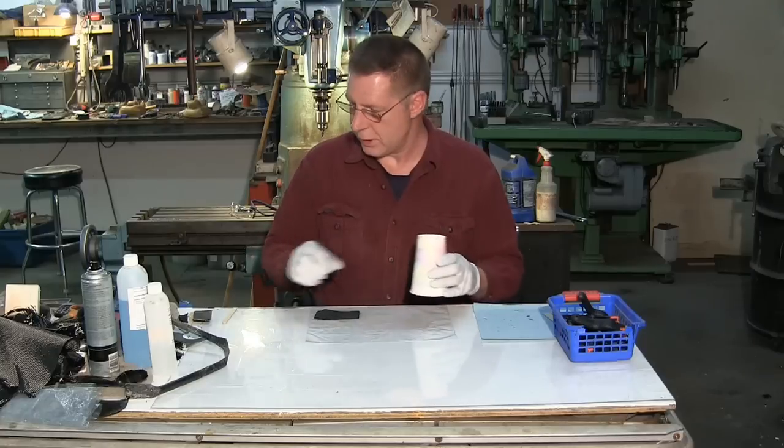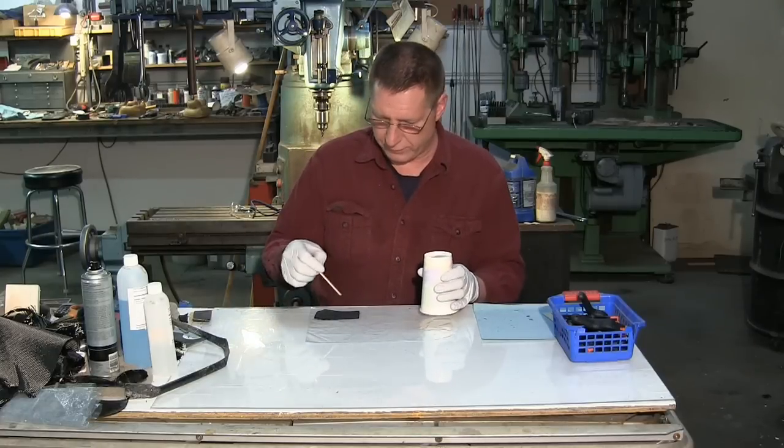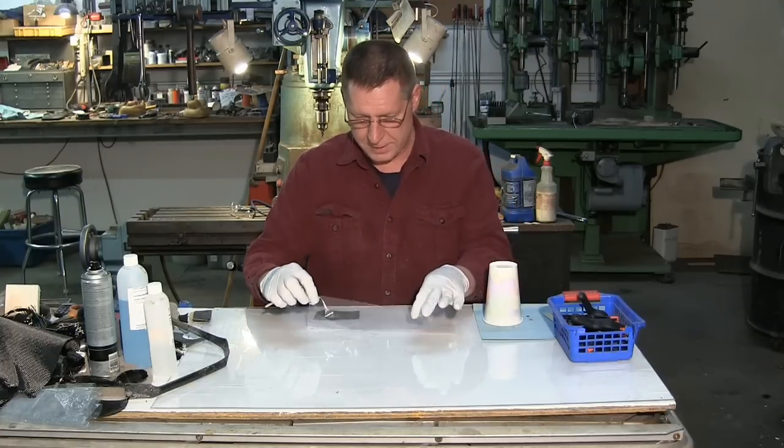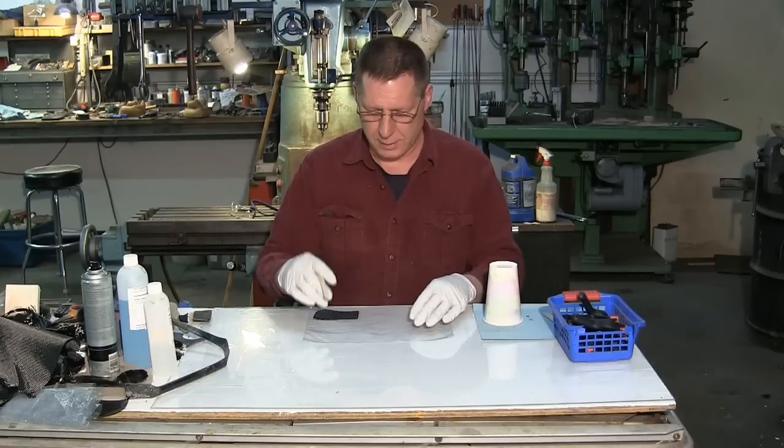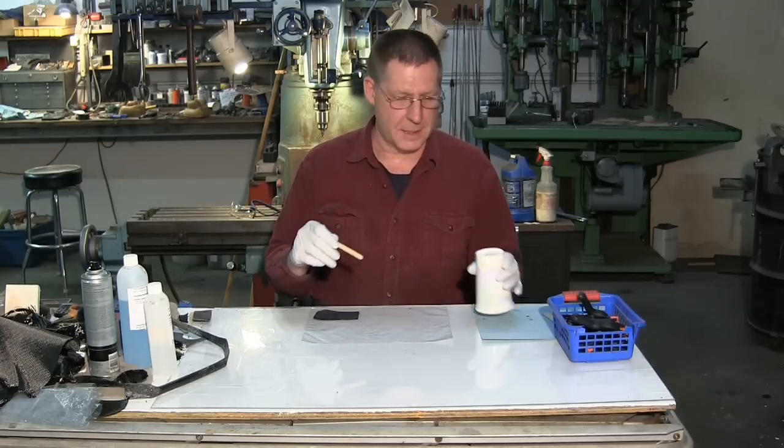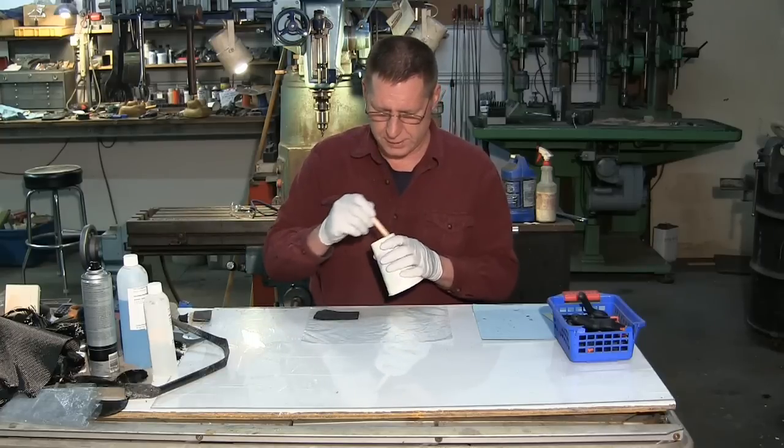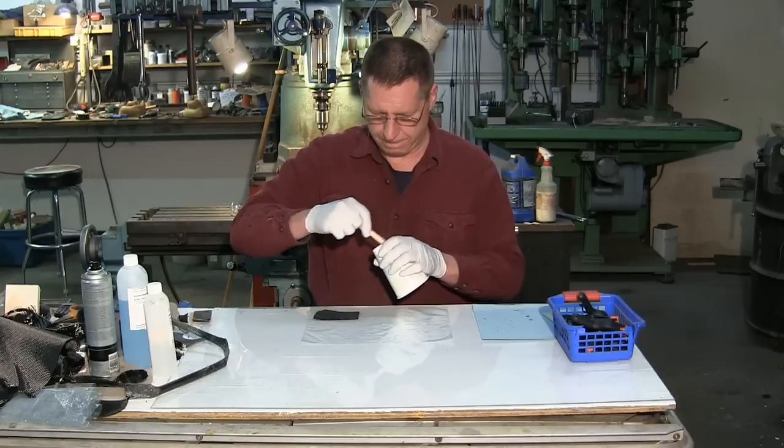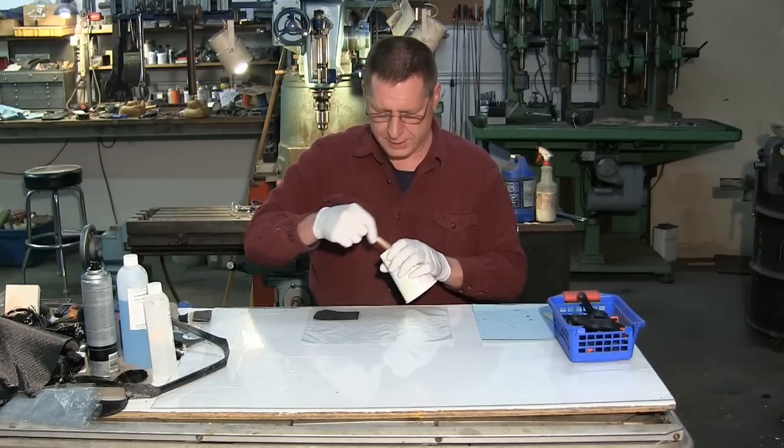The first thing we need to do is mix up some resin after we've cut out our stuff. I also have a thin piece of plastic on my table here. Actually, it's kind of slightly stretchy plastic. That's the best kind of plastic for doing this type of repair. So, let's mix up our epoxy here.